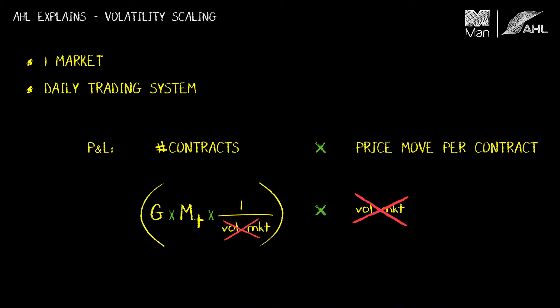Volatility scaling works in two ways. One is neutralising the different volatilities encountered in different markets — some markets have high volatility, for example natural gas, whereas others have low volatility, for example treasury bonds. Volatility scaling allows you to target a P&L risk in both markets by neutralising their very different volatilities. The other way is within a single market: volatility changes quite a lot through time, so if volatility rises, there is a corresponding shrinking of your position that compensates, keeping the overall P&L independent of that changed volatility.